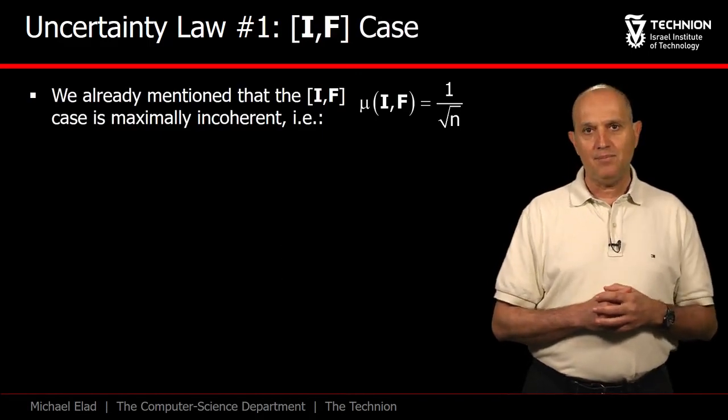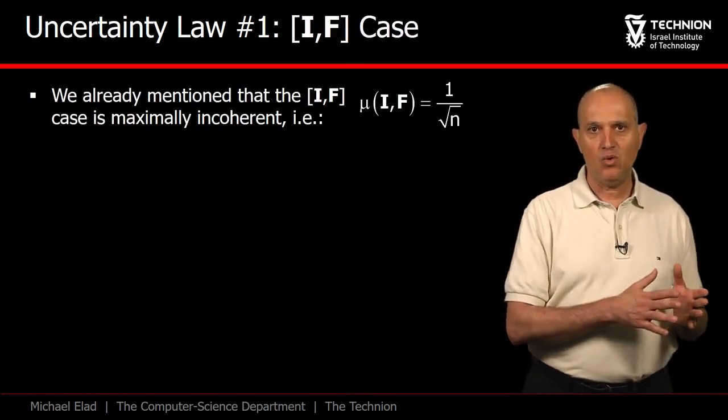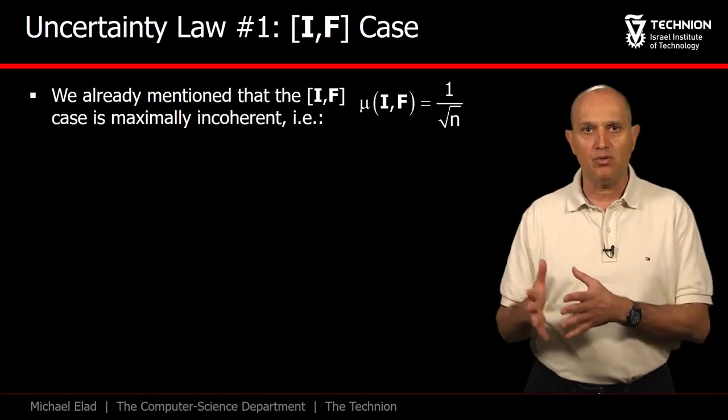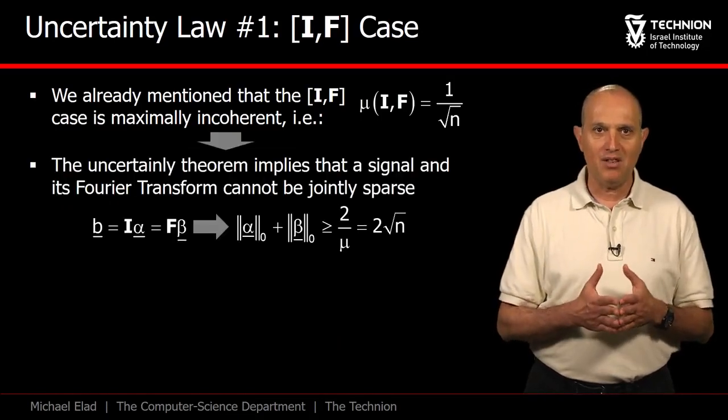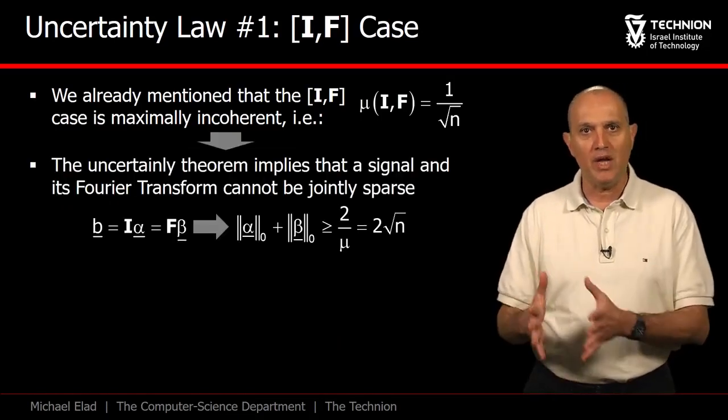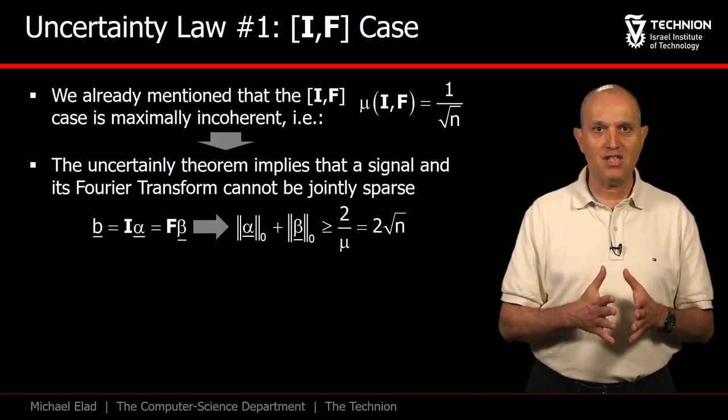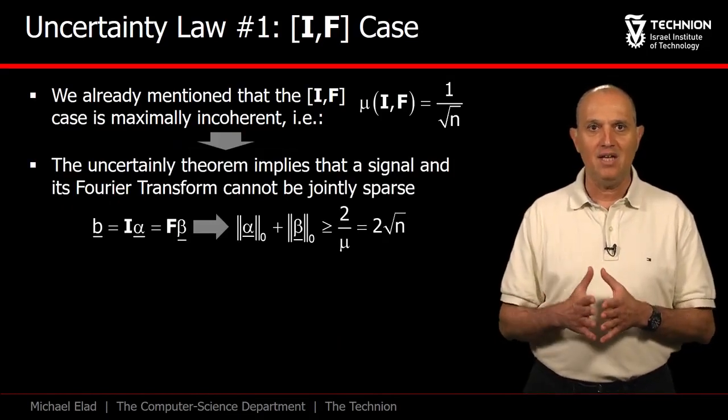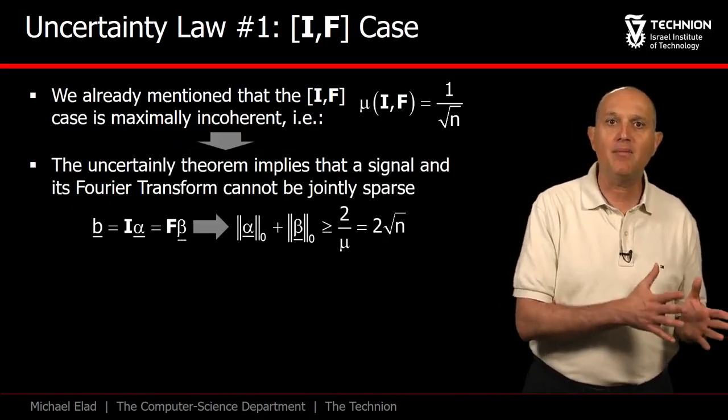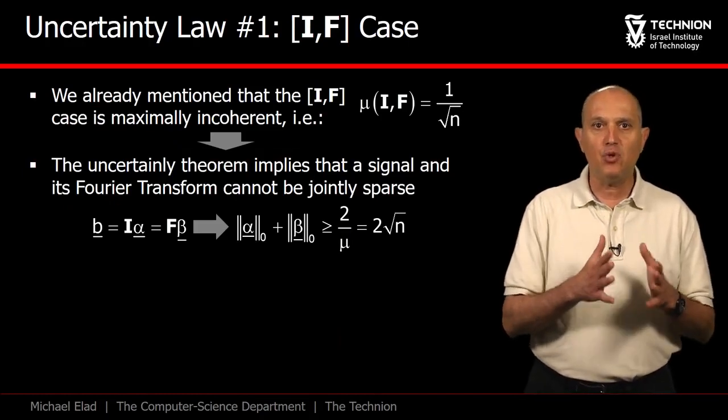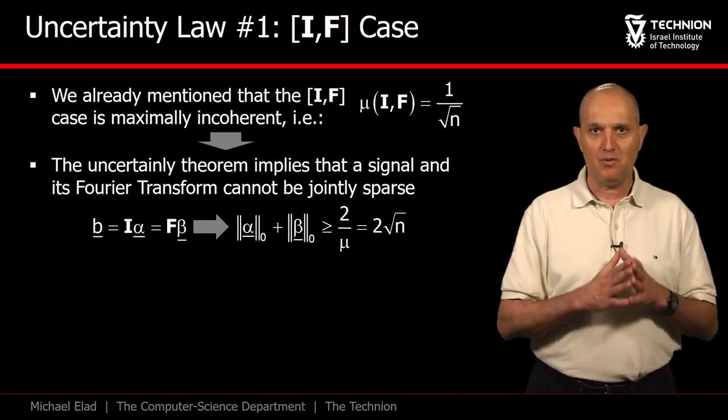As an example, in the identity-Fourier case, we have seen that the μ is 1/√n. Thus, the bound in this case becomes 2√n. This suggests that when given a signal, it cannot be sparse both in time and frequency, and it must have jointly at least 2√n non-zeros.